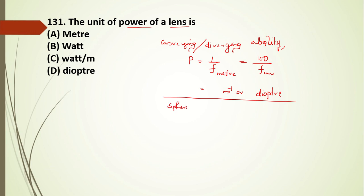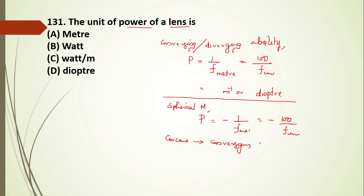For a spherical mirror, the power formula is minus 1/f in meters, or minus 100/f in centimeters. The negative sign appears because for a concave mirror (converging mirror), the focal length is negative, and negative times negative gives positive power, which is correct. The answer to question 131 is D.